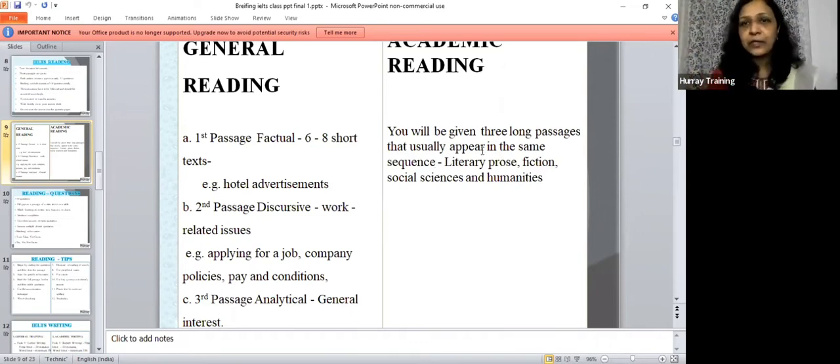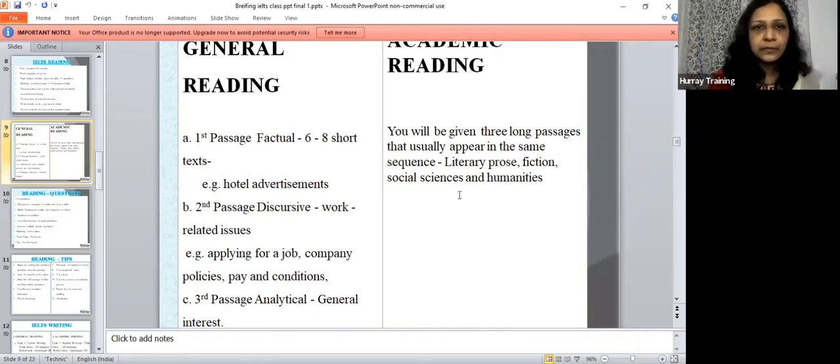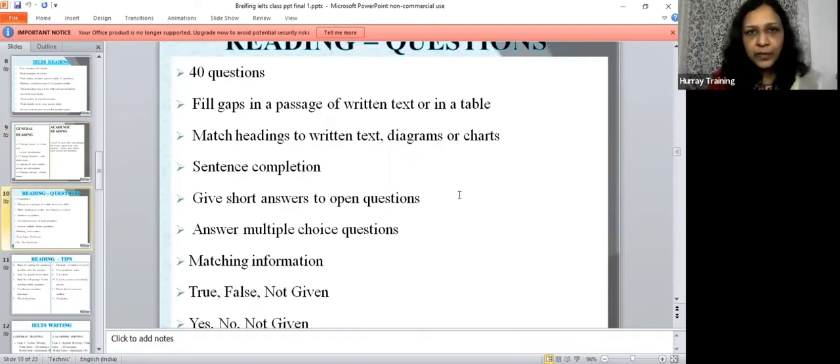Now let's look at how the passages are sequenced in the academic reading passages. So first you have something on literary prose, that is reading passage one. Reading passage two will be on fiction. Reading passage three will be on social sciences and humanities. So this is the general sequence that it comes in. Now the next one is over. These are the question types.